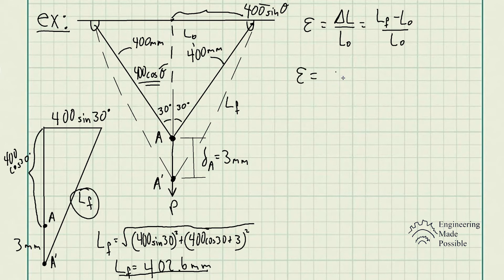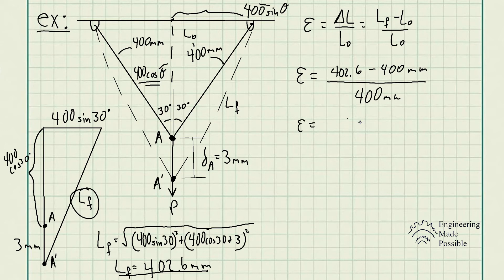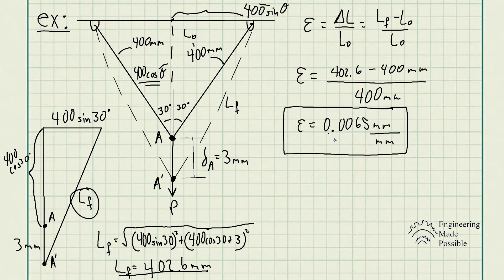The change in length is 402.6 take away 400 millimeters, divided by the original length of 400. The units cancel out, confirming this is a unitless ratio. The normal strain for each wire is 0.0065 millimeters per millimeter — for every millimeter of original length it deformed 0.0065 millimeters — or 0.65 percent of its original length.